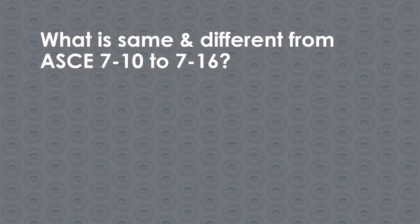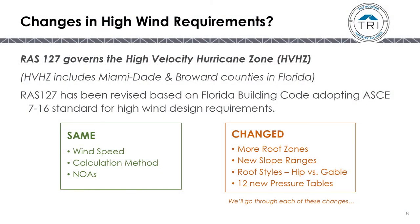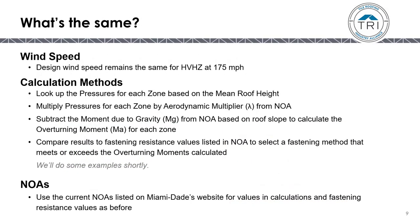We'll take a look at what is the same and what is different from the ASCE-710 standard to the new ASCE-716 standard that determines the changes to the high-velocity hurricane zone RAS-127. RAS-127 governs the high-velocity hurricane zone, or HVHZ, in Florida, which includes Miami-Dade and Broward counties. RAS-127 has been revised based on the Florida Building Code adopting the ASCE-716 standard for high wind design requirements.